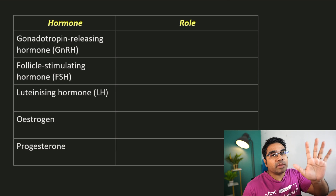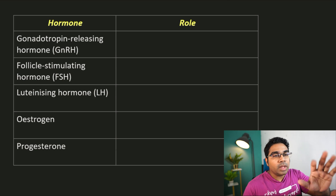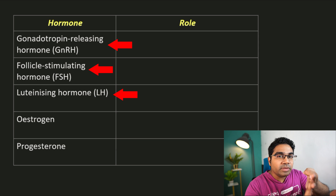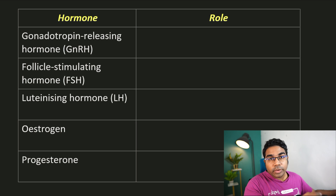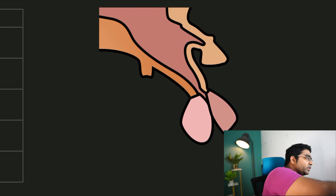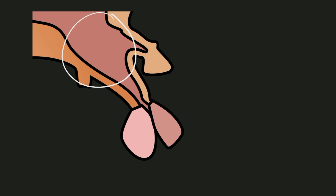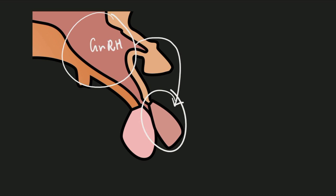There are five hormones that play a part in the menstrual cycle. Three are released from the brain and two are released from the ovaries. Gonadotropin-releasing hormone, or GnRH, is released by the hypothalamus, and its role is to stimulate the release of the gonadotropins from the anterior pituitary.